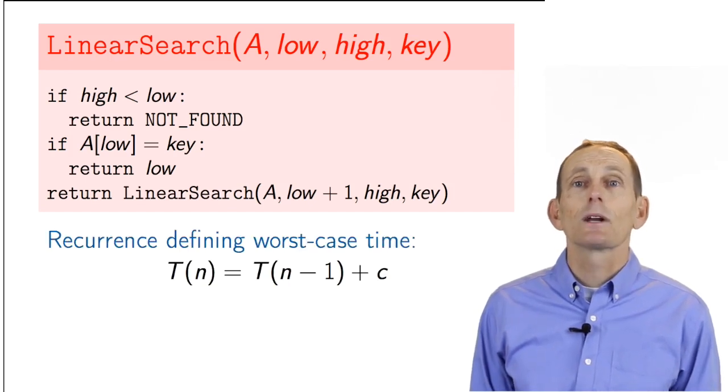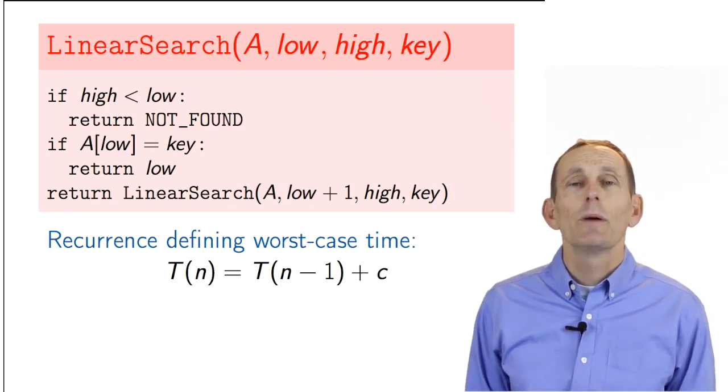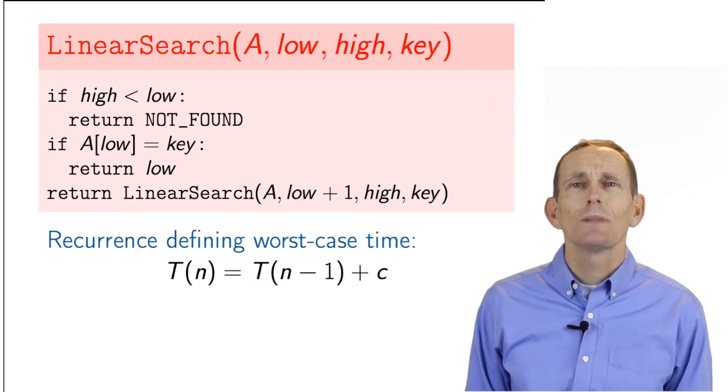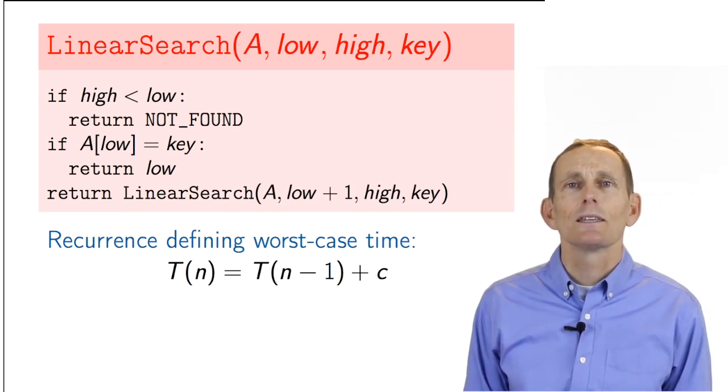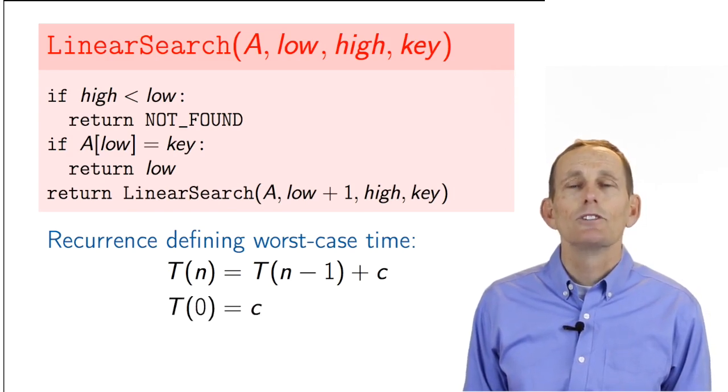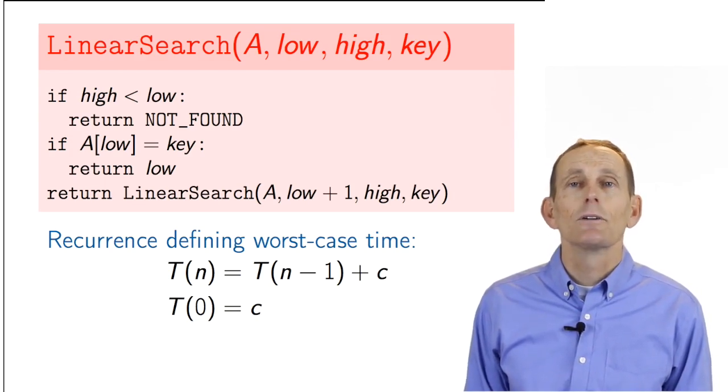The constant amount of work includes checking high versus low, checking A at low equals key, preparing the parameters for the recursive call, and then returning the result of that call. Thus, the recurrence is T of n equals T of n minus 1 plus C, where C is some constant. The base case of the recursion is that in an empty array, there's a constant amount of work, checking high less than low and then returning not found. Thus, T of 0 equals C.